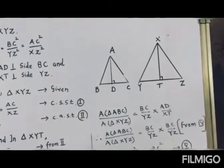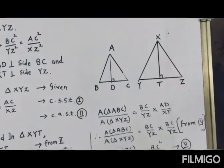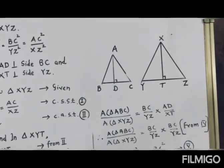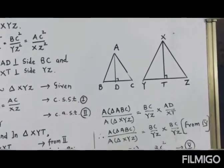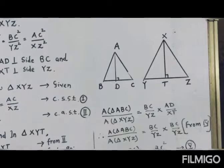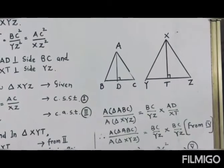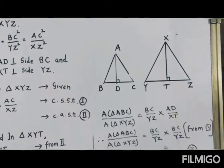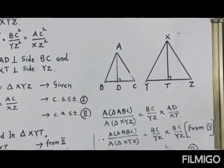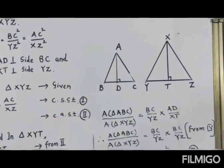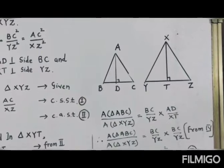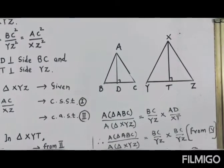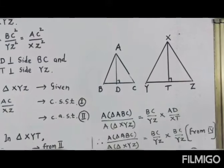Very good morning. Welcome to Similarity Part 4. Today we are going to learn about the area of similar triangles. The statement says: the ratio of the areas of two similar triangles is equal to the ratio of the squares of their corresponding sides.